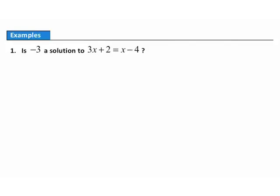Now let's take a look at an example that will help you understand how to check to see if a number is a solution to an equation. Example 1. Is negative 3 a solution to this equation? This is a more complicated equation and we can't just look at it and see if it's going to work. We're going to have to substitute negative 3 into both sides of this equation.